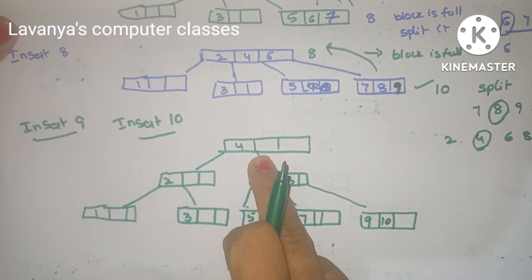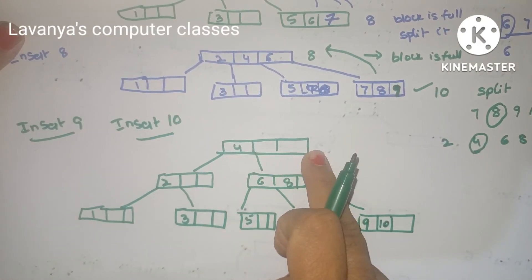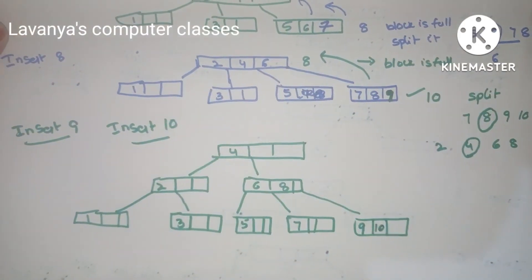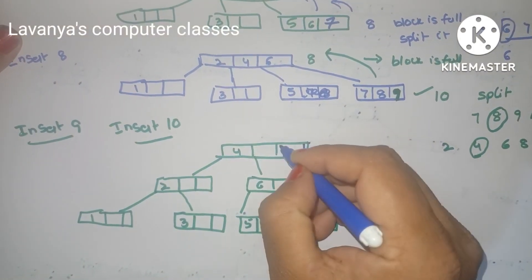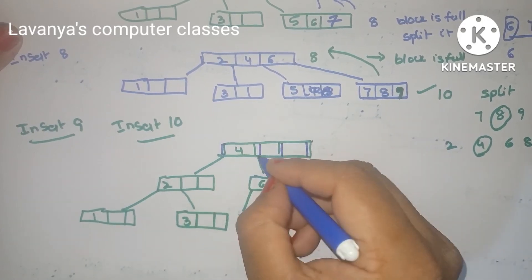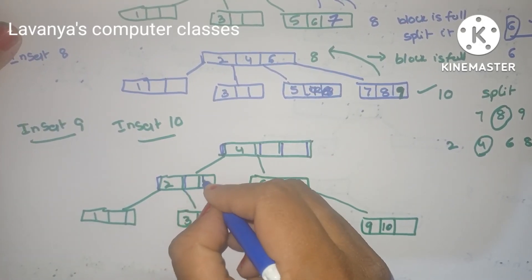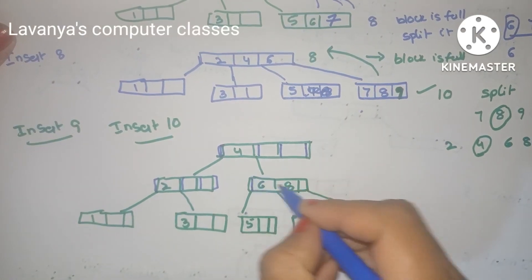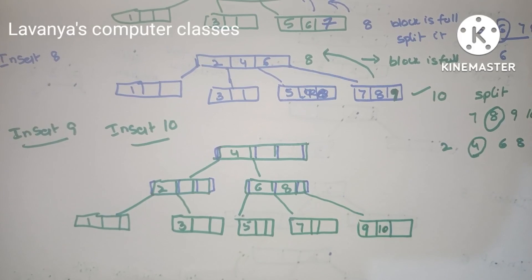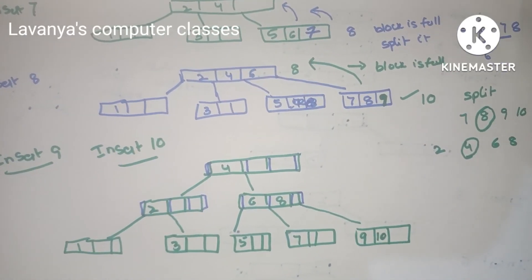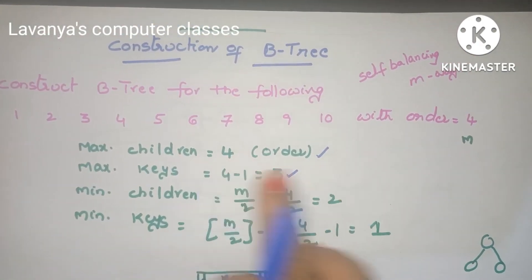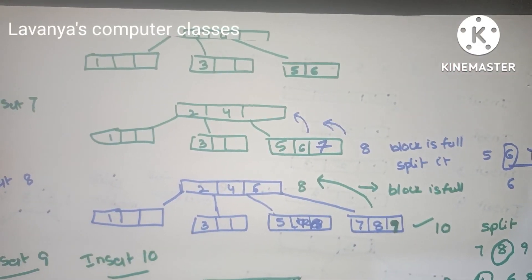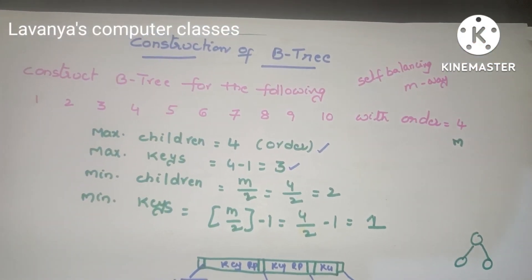This is the final B-tree with root node 4, having 3 keys and 4 children. The root has 3 children — these are the block pointers. The block pointers point to the next level of nodes. Depending on order 4, maximum children is 4 and maximum keys is 3. Each node has a maximum number of 4 children. This is the complete construction of a B-tree with example.